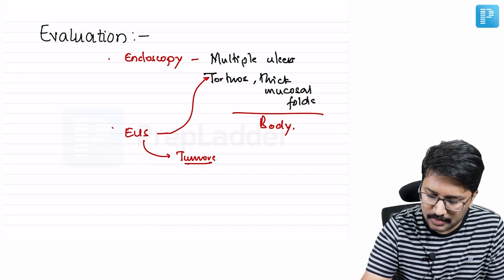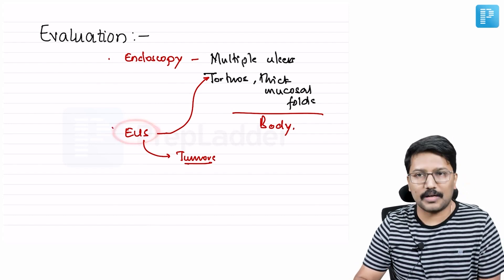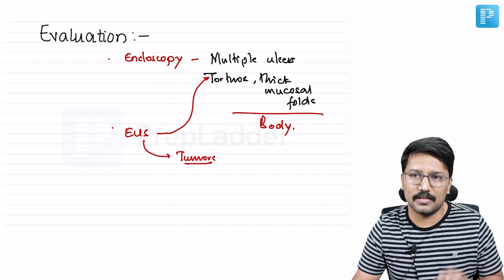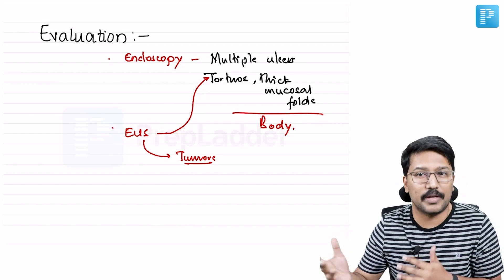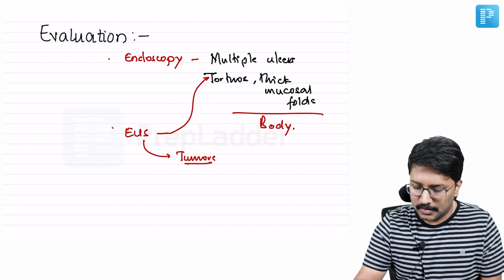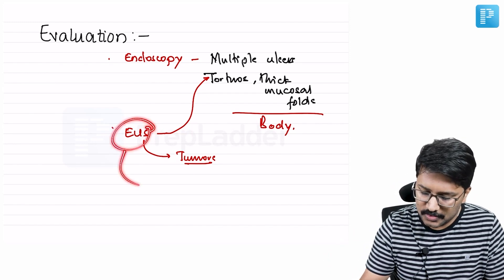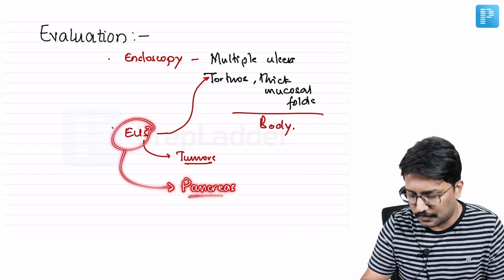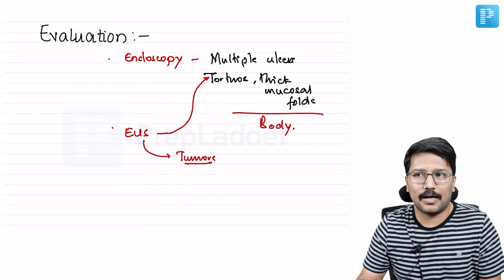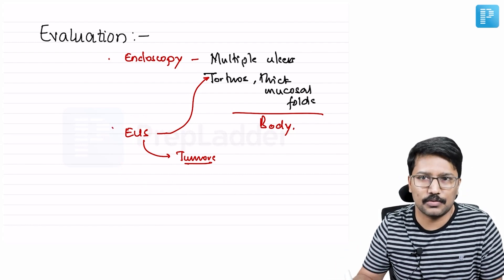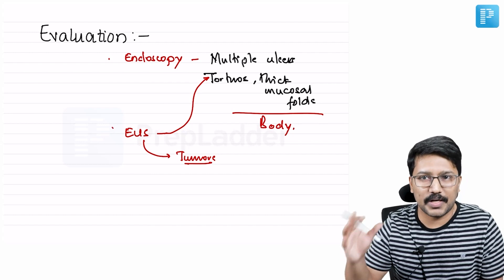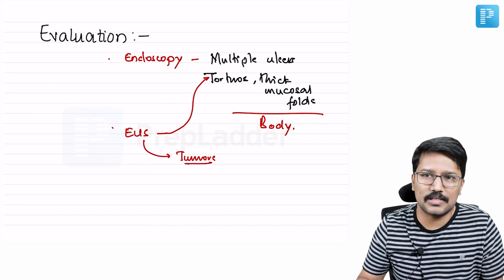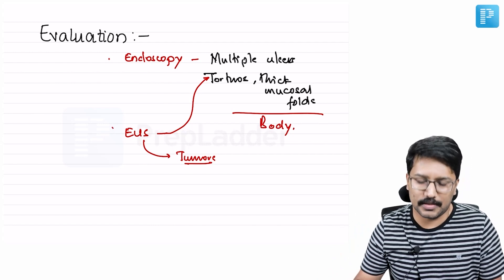When it comes to endoscopic ultrasound, we have to remember that EUS is not very sensitive for detection of tumors present in the duodenum, which is more common in MEN 1 syndrome. EUS is more sensitive in detecting tumors present in the pancreas, as seen in the previous image. It can be considered an initial investigation of choice when suspecting a pancreatic tumor. But when suspecting a duodenal tumor, it loses sensitivity and you have to go with other imaging modalities.